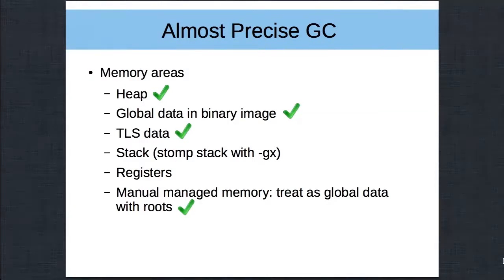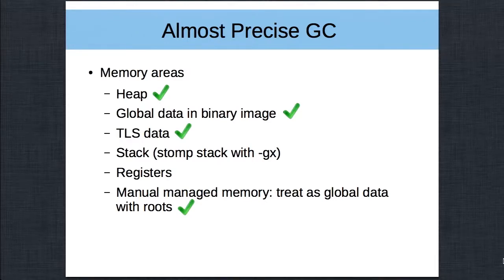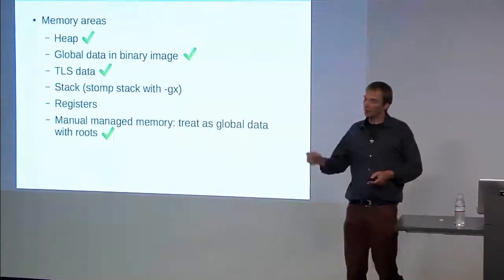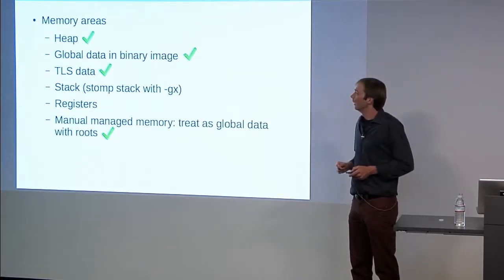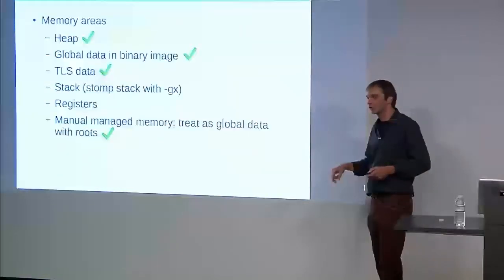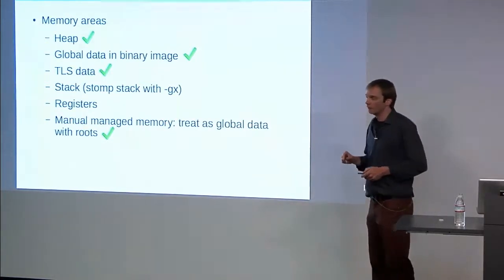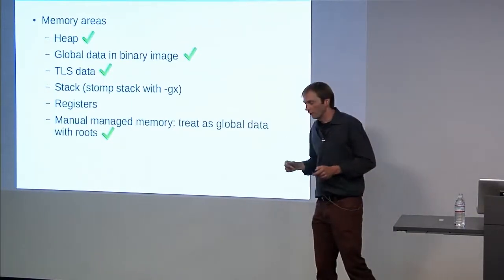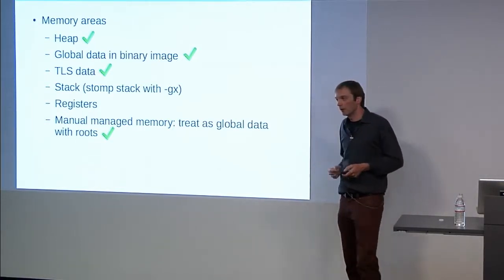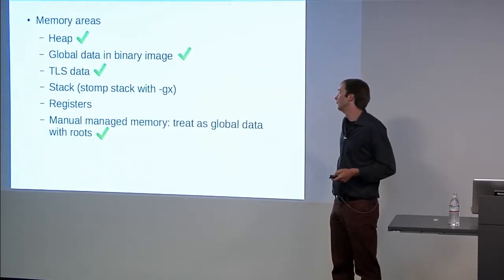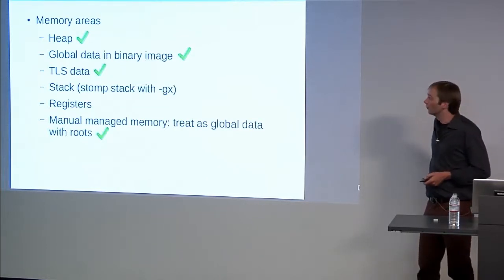We've now covered the heap, global data in the binary image, and thread-local storage data. The stack is a problem because it's hard to describe pointers on the stack, but we have stack stomping — a recent switch which overwrites stack memory used by a function when it exits, so pointers from that function cannot leak into other functions via uninitialized stack space. Registers are even harder to describe by type info, but these are only very few values so we might be able to live with this.